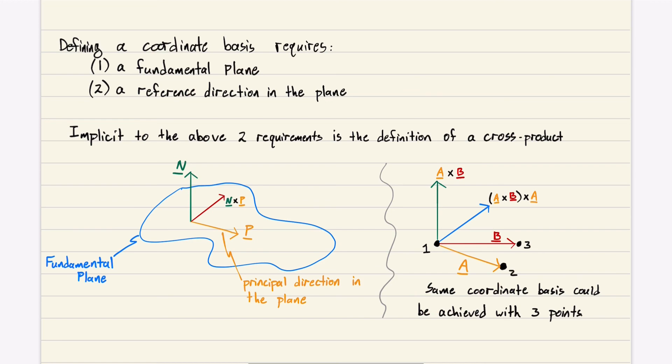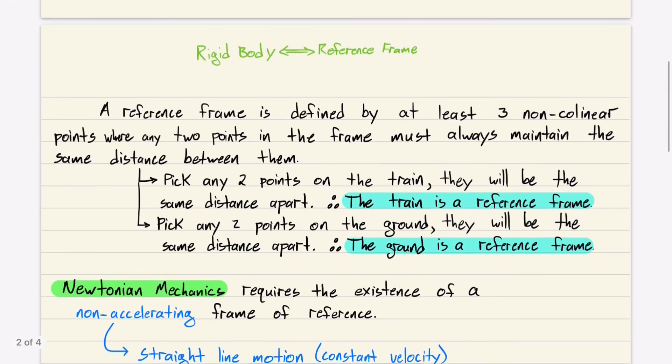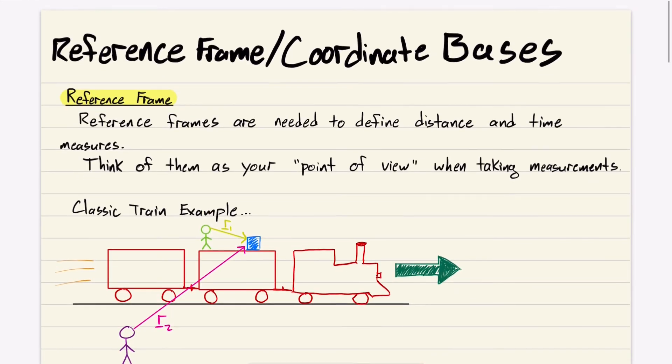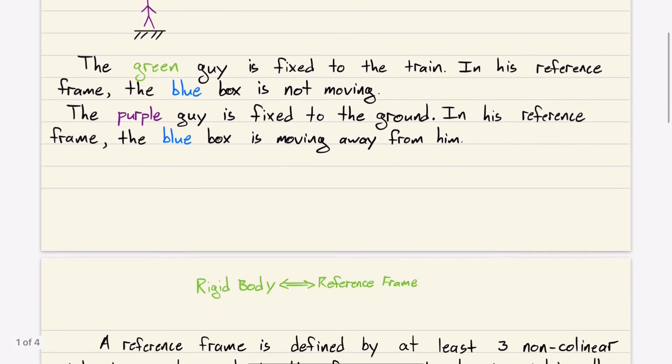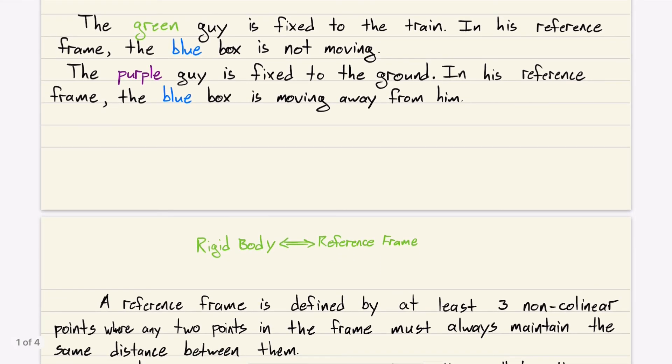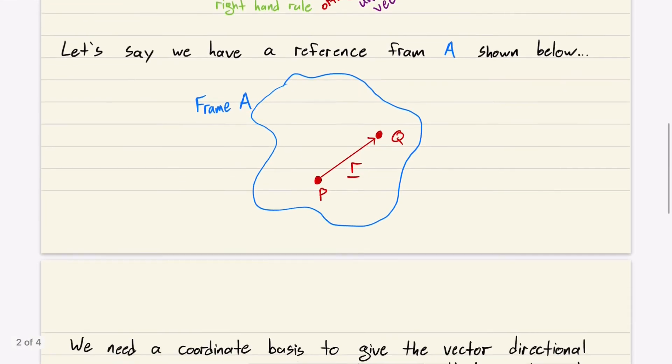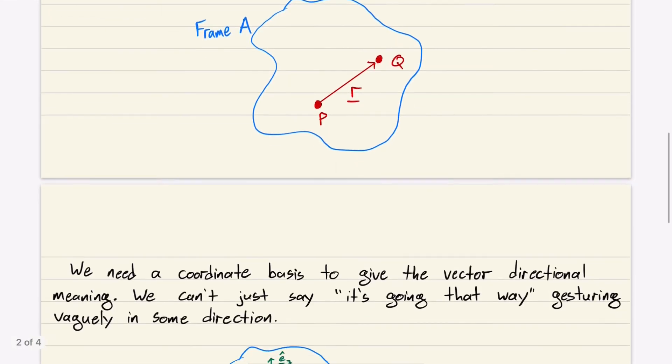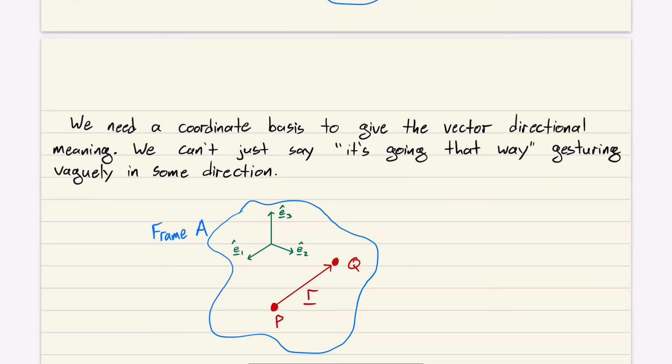Don't worry too much about this. All this coordinate basis and reference frame stuff will become clear when we start doing examples. I just wanted to expose you first to the concepts so that when we start talking about them, you'll remember. Next lesson, we're going to talk about direction cosine matrices. Really useful topic. We'll use it in all of our examples.